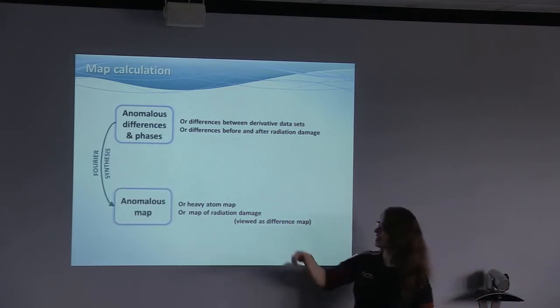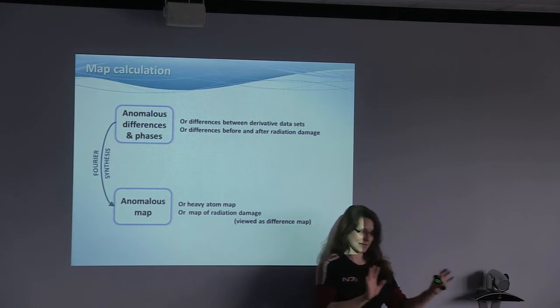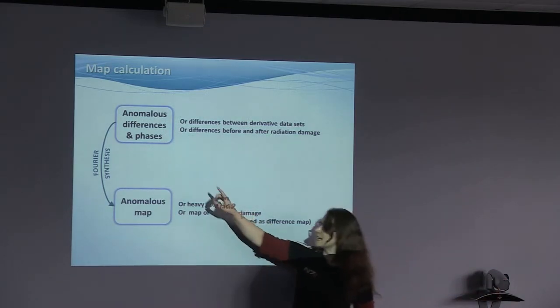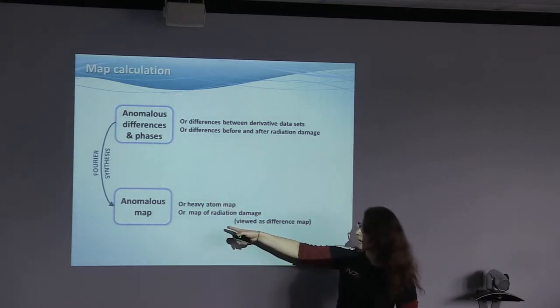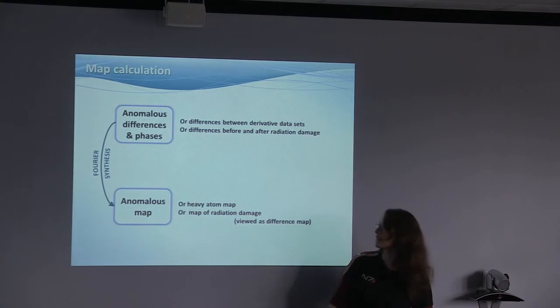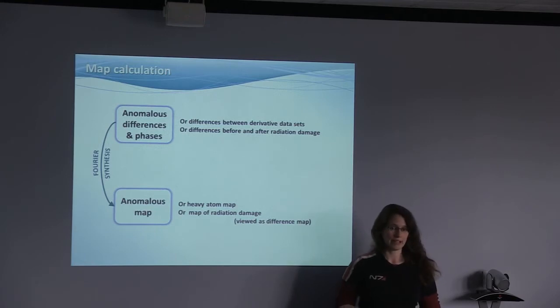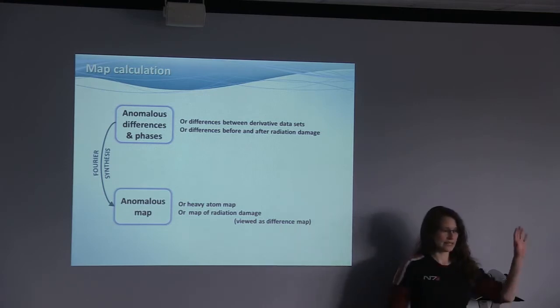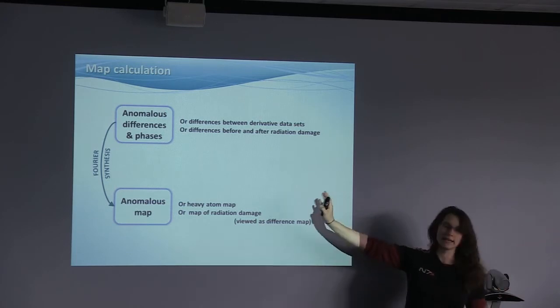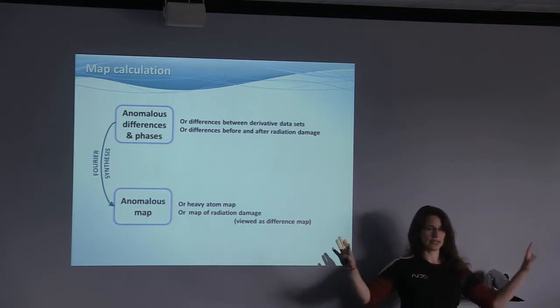There's another thing we can do. Once we've solved our structure and we know the phases, we can take the phases we know and the anomalous differences and calculate a map, and that would be the anomalous map. More exactly, we could take only the phases of our anomalous scatterers. Or we could take the differences between derivative data sets. That would be isomorphous replacement. Or before and after radiation damage, that would be radiation-induced phasing maps. Also, you could take a data set from before a reaction happened in the crystal and after a reaction happened in the crystal and do a difference map of these two data sets.